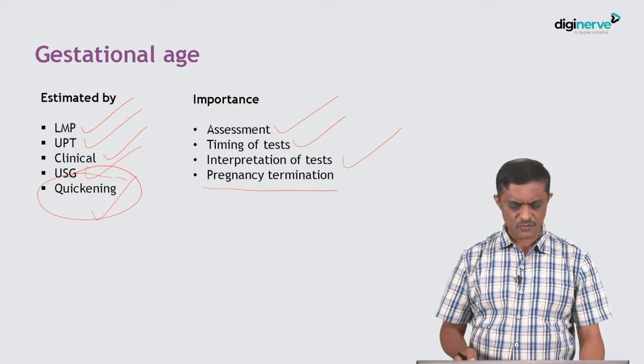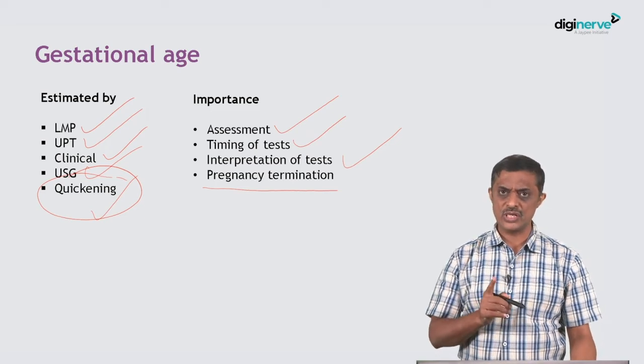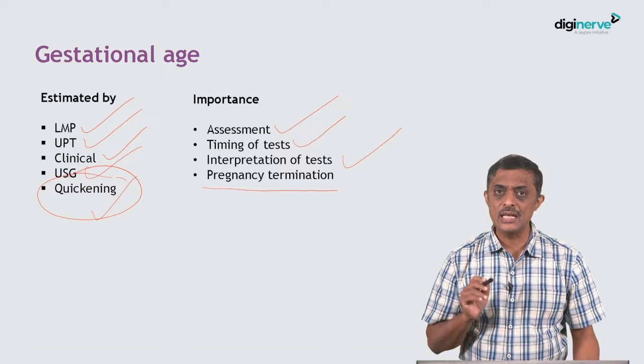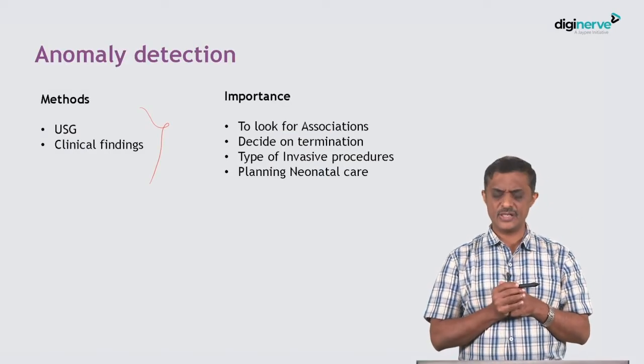Gestational age is also important for termination of pregnancy for various reasons. Each country has its own legal stipulations to terminate pregnancy. For example, in India, only less than 20 weeks gives you the right to terminate pregnancy. The second objective is anomaly detection.